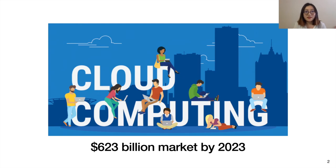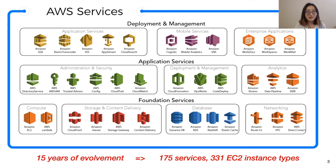Cloud computing is no doubt one of the biggest markets in the computer industry today. Since the launch of AWS in 2006, 15 years have passed. Cloud computing has evolved from a simple service that just runs computers to a sea of services. Today, AWS has 175 services, and just within EC2 there are 331 instance types.